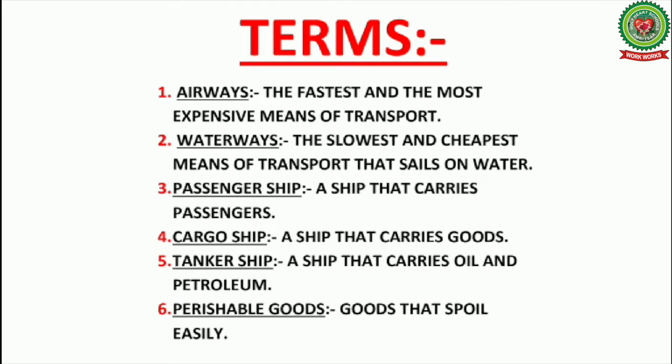Now let's look at the key terms related to today's topic. First, airways: the fastest and most expensive means of transport. Second, waterways: the slowest and cheapest means of transport that sails on water. Third, passenger ship: a ship that carries passengers. Fourth, cargo ship: a ship that carries goods. Fifth, tanker ship: a ship that carries oil and petroleum. Sixth, perishable goods: goods that spoil easily.